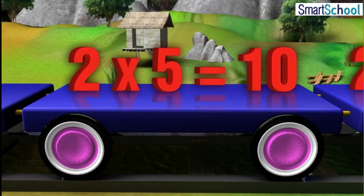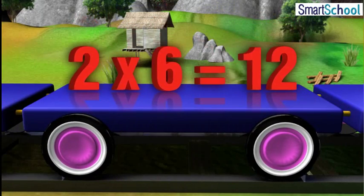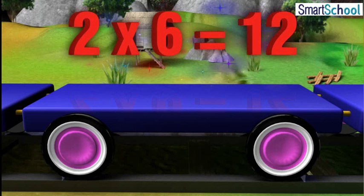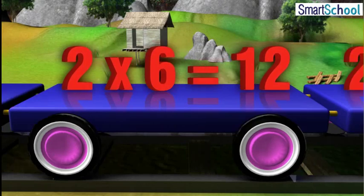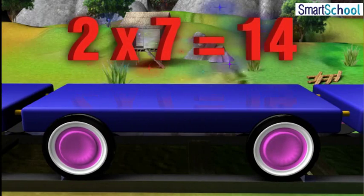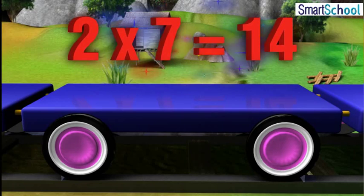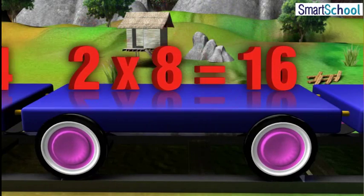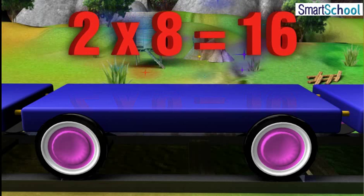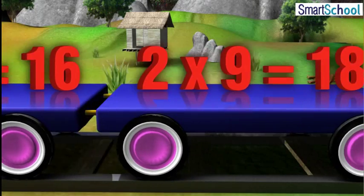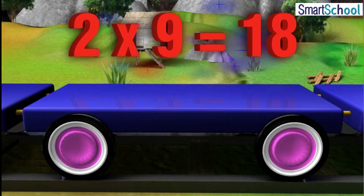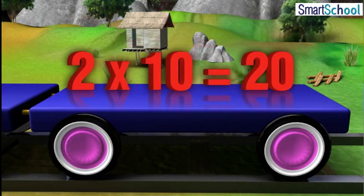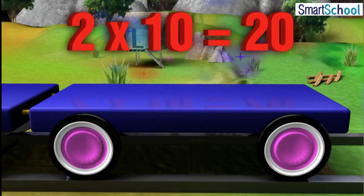Two sixes are twelve, two sevens are fourteen, two eights are sixteen, two nines are eighteen, two tens are twenty.